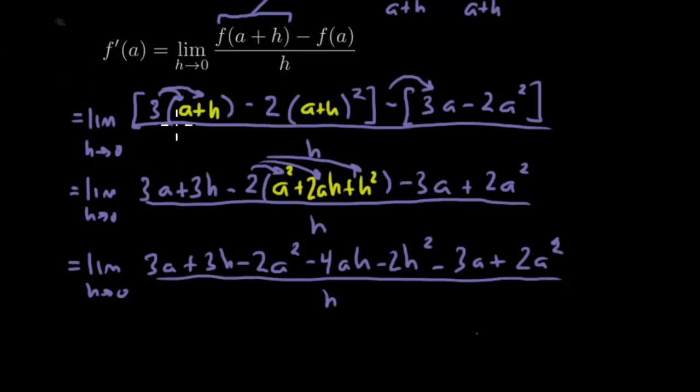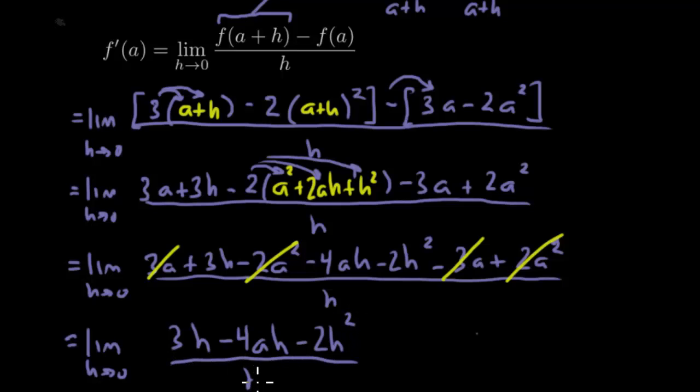Now, hopefully things cancel, which they do. We have a 3a and a minus 3a, so those cancel. We have a minus 2a squared and a positive 2a squared. So what's left after canceling is 3h minus 4ah minus 2h squared all over h.